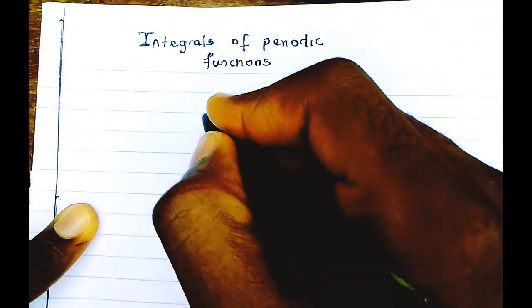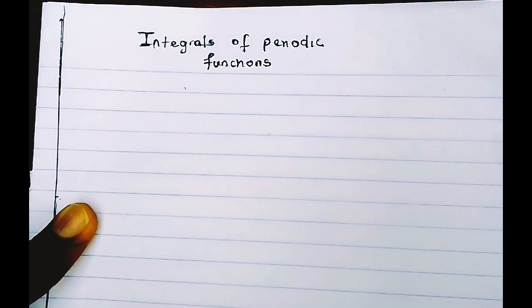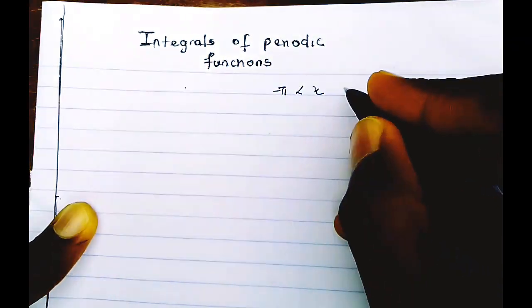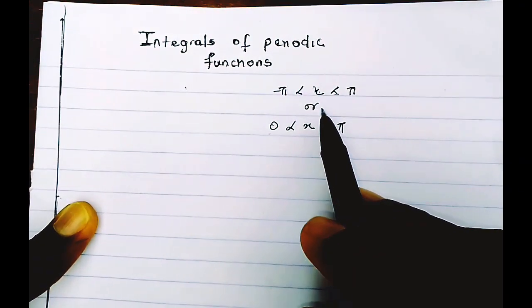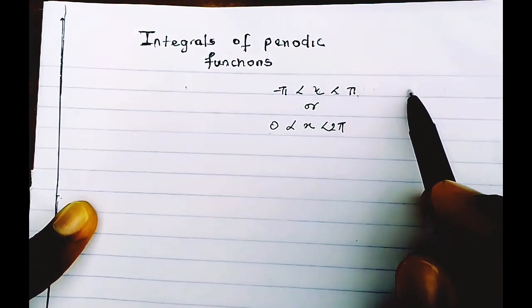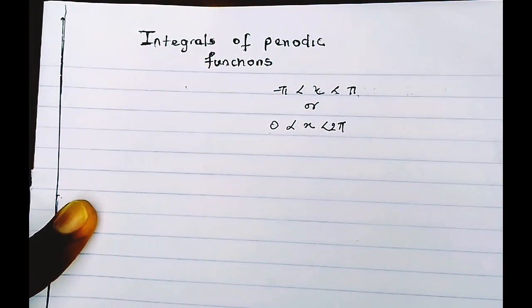The periodic functions we'll be working with for Fourier series have a period of 2π. We are going to make use of a range of 2π. That means we'll be using the range of minus π to π, or the range of 0 to 2π. The values of x will be between minus π and π. The range is π minus (minus π) which equals 2π, or 2π minus 0 which is also 2π. So the period we'll be working with for Fourier series is 2π, and all our definite integrals will have a range of 2π.